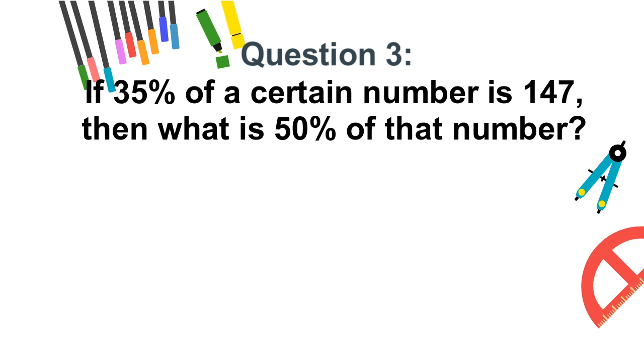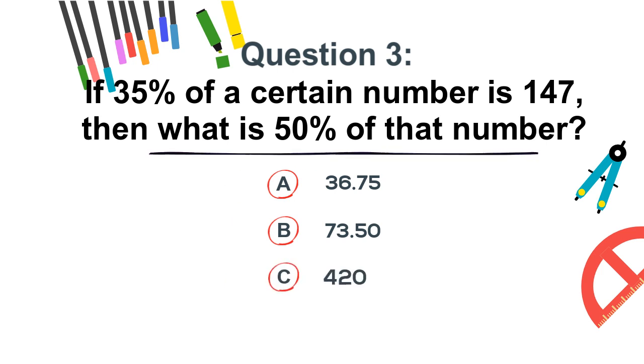Question 3. If 35% of a certain number is 147, then what is 50% of that number? a. 36.75. b. 73.50. c. 420. d. 210.